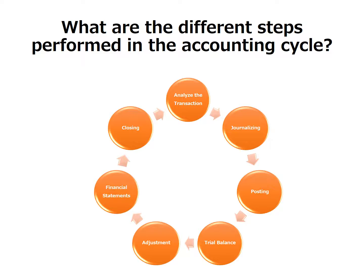What are the different steps performed in the accounting cycle? The cycle starts with the analysis of the transaction. Next, we have journalizing. Then we have posting. Next is the preparation of trial balance. Then we have the adjustment. Next is the preparation of financial statements. Then closing. The cycle continues as long as the business exists.